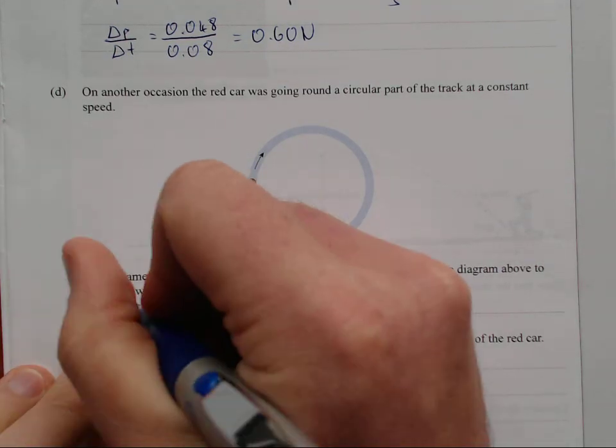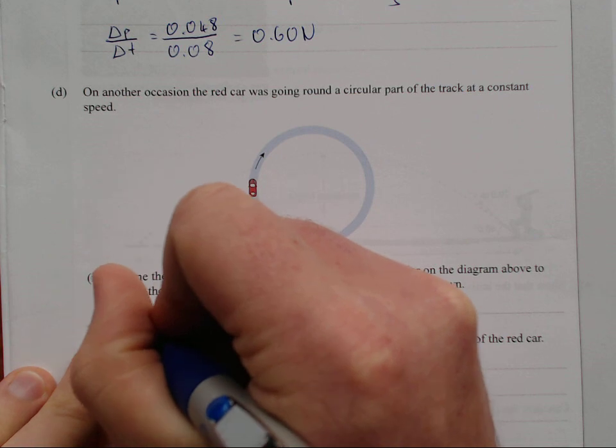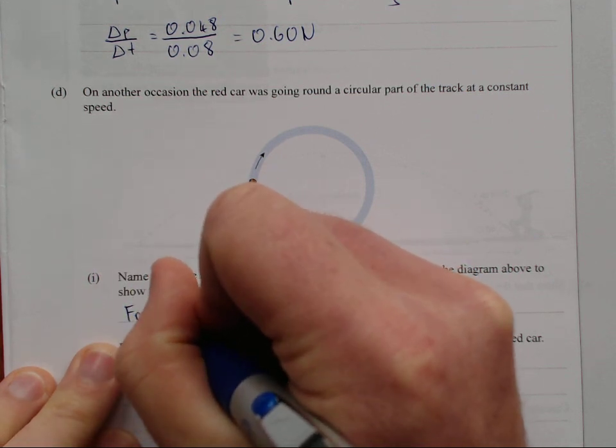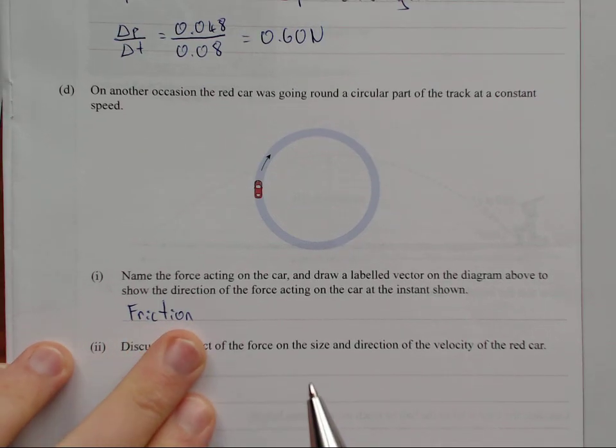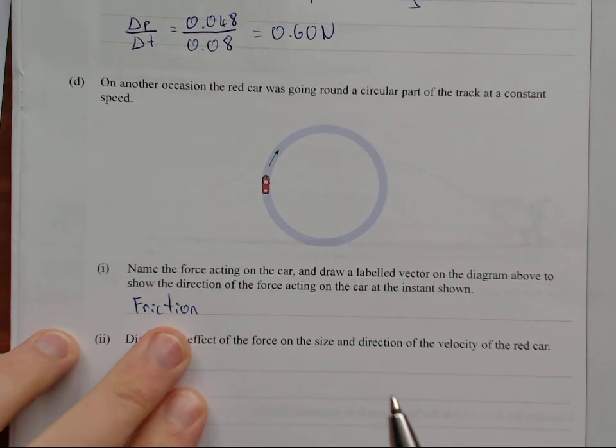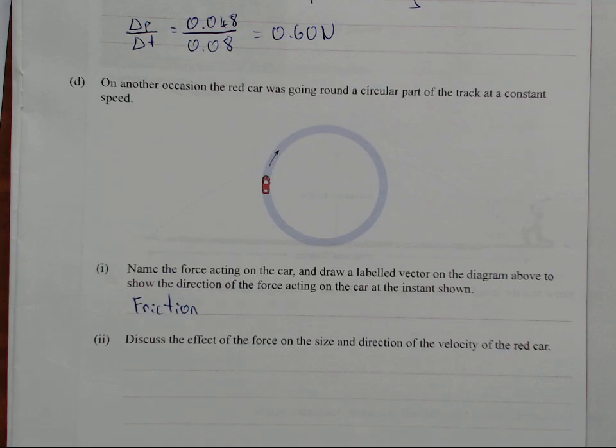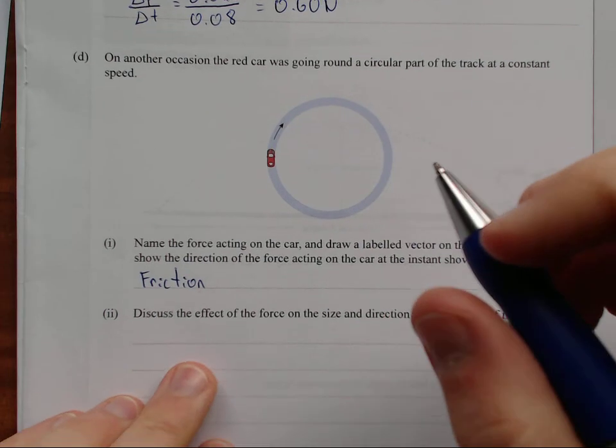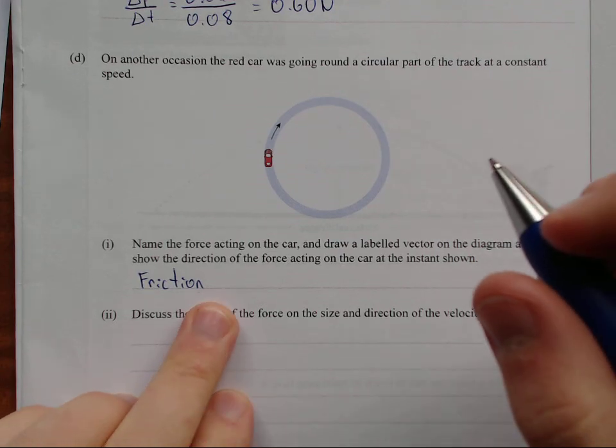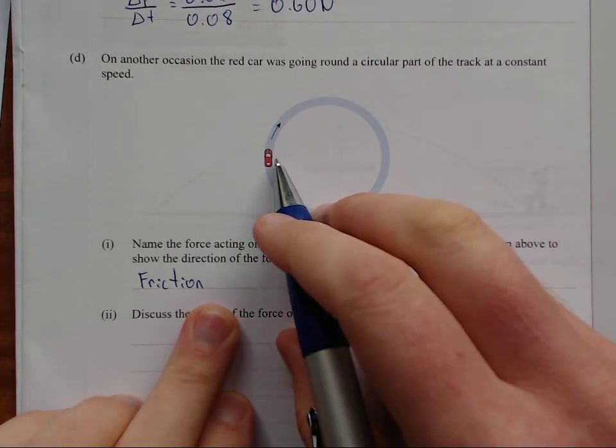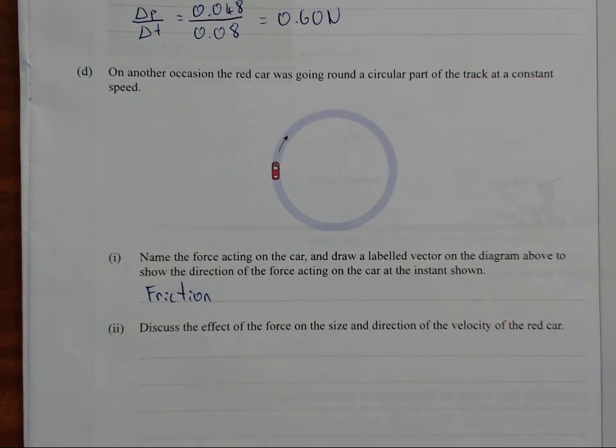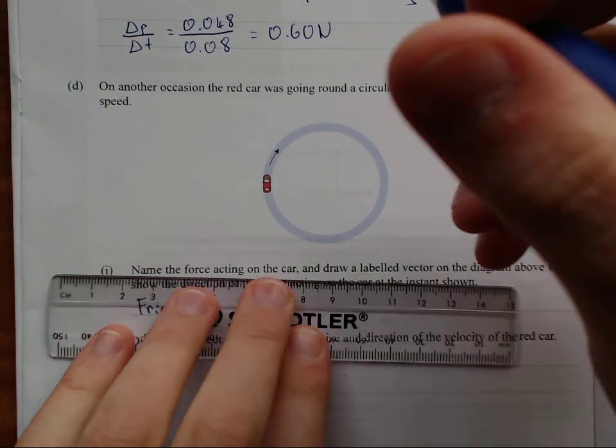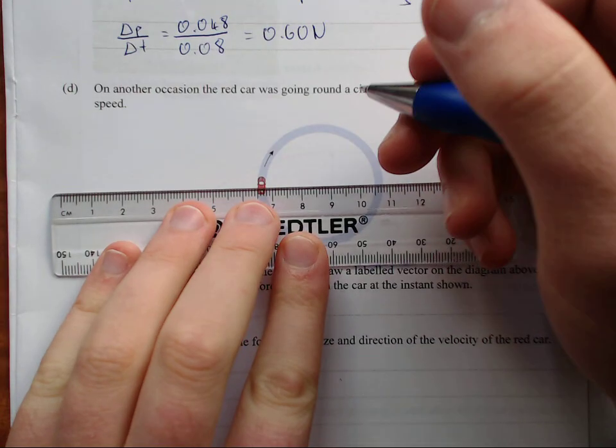So the force is friction, and this is something that really grinds my gears, because even in the marking schedule, it gives you points if you write centripetal, which is wrong. Centripetal isn't a force in of itself, it's a description of a branch of forces. It's Latin for center pointing. It's friction that makes the car turn the corner.